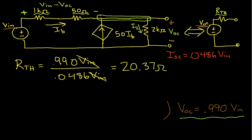So we're pretty much done. We know that this circuit has an equivalent Thevenin representation where the source, I'm sorry, not the input, but the source is 0.99*VIN. And the resistance is 20.37 ohms.